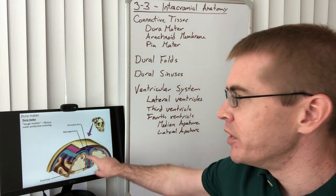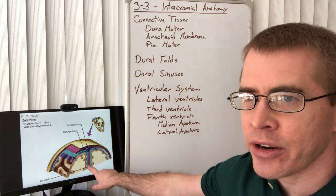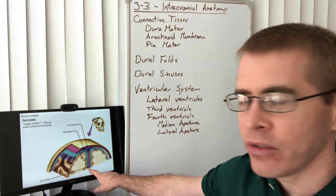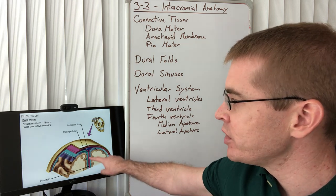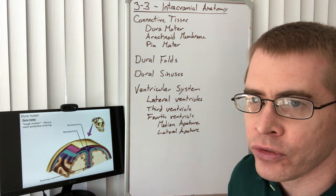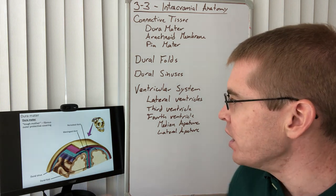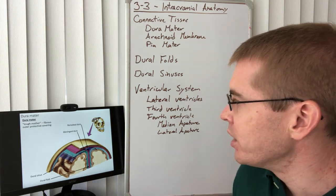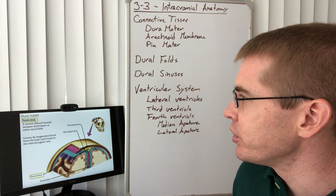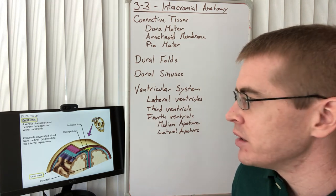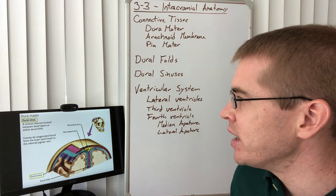Where the meningeal layer folds over onto itself, we have what is known as a dural fold. You can see the dural sinus labeled here in yellow.